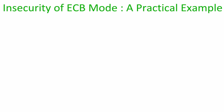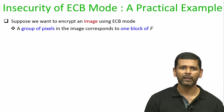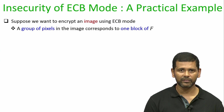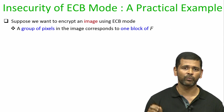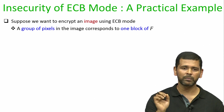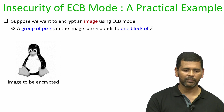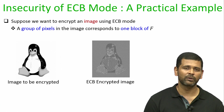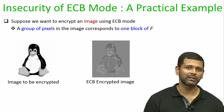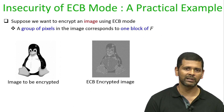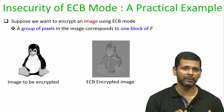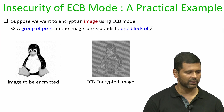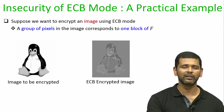To demonstrate how insecure ECB mode can be, consider encrypting an image. Since an image is a collection of pixels, we can treat groups of pixels as message blocks. When a black-and-white image is encrypted using ECB mode, the encrypted image shows a clearly visible pattern — groups of black pixels always produce the same ciphertext, and groups of white pixels always produce the same ciphertext.